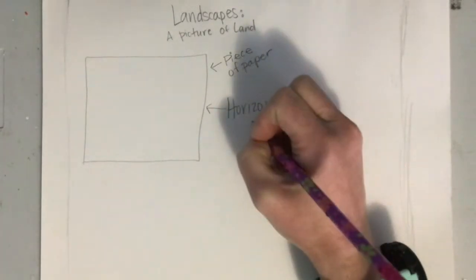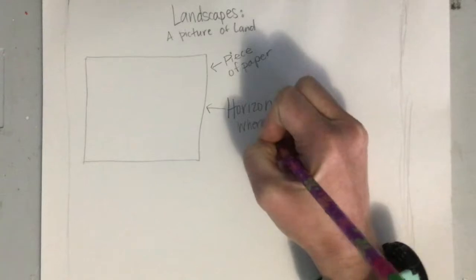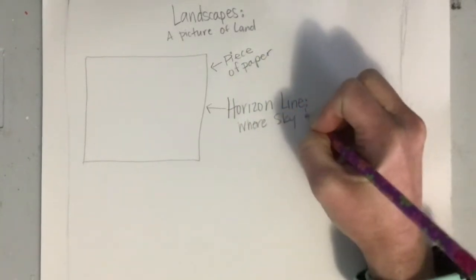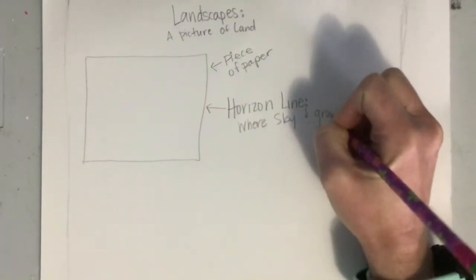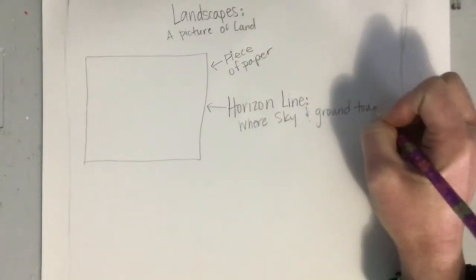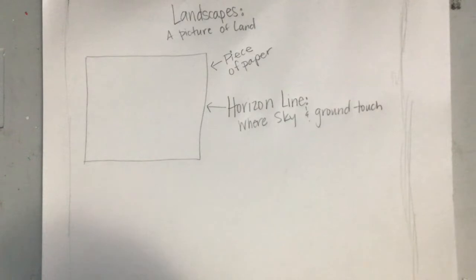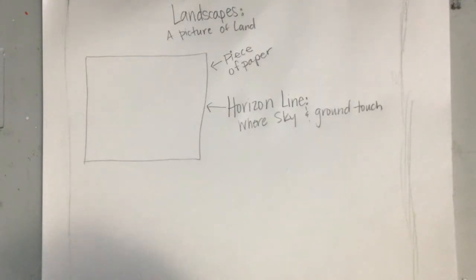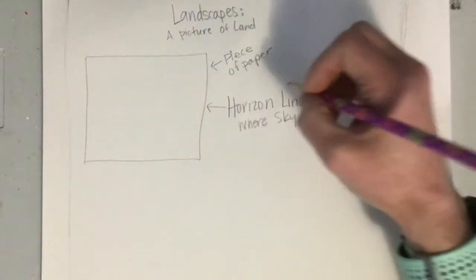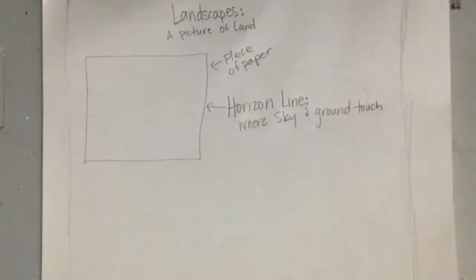The horizon line is where the sky and ground touch. In the real world, when you look out far enough, the sky and ground seem to almost touch each other. It seems weird because when you're standing in your spot, you can see the sky is above you and the ground is below you, but really the ground and the sky touch and it keeps going past you — and that's one of the hardest things to draw. So when we draw, we use the horizon line to help us with that.